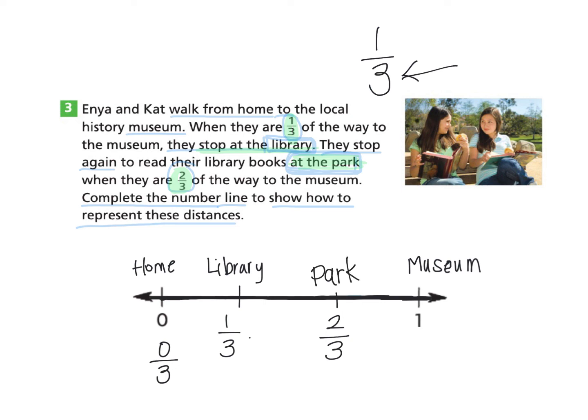When they reached the museum, we know that this would be 3 over 3, meaning they completed 1, 2, 3 equal parts to the museum. If you would like to go back and re-watch this video, you may do so and pause along the way anytime as needed.